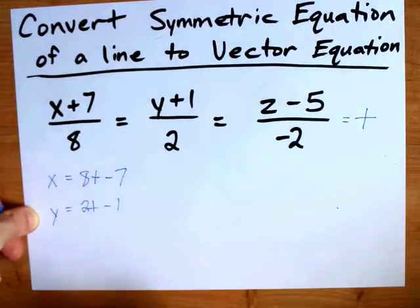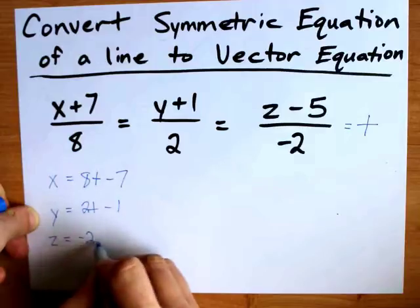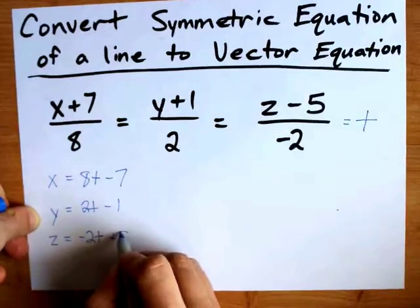I could do the same for z. Z becomes negative 2t plus 5.